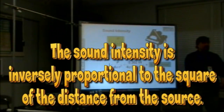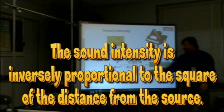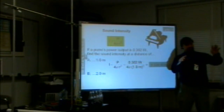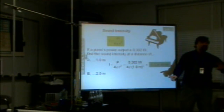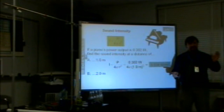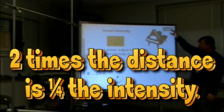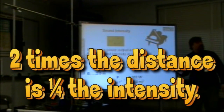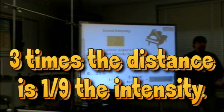This is called an inverse square law. So if we double the distance, what's going to happen to the intensity? Inverse square means 1 over 2 squared. What's that? One fourth. So inverse square means that if you double the distance, you have one fourth the intensity. This is what we're talking about with the sonic boom — how far you are. If you're 3 times the distance, that's one ninth the intensity.